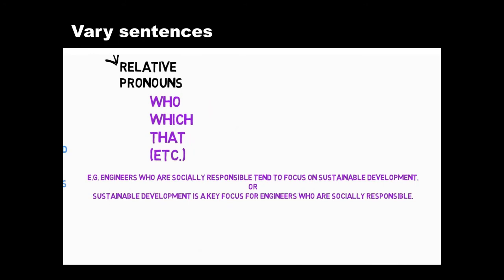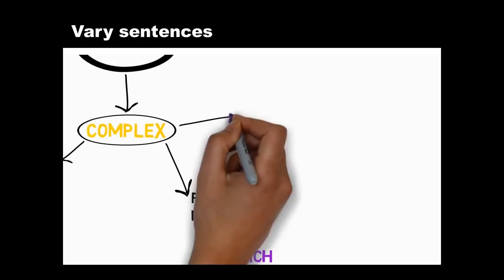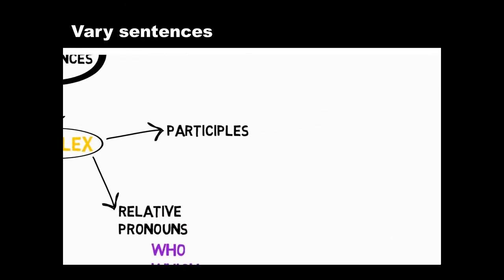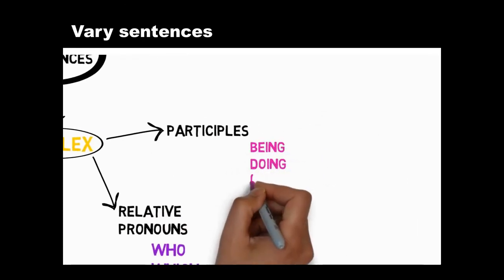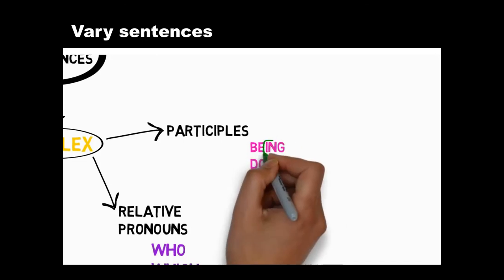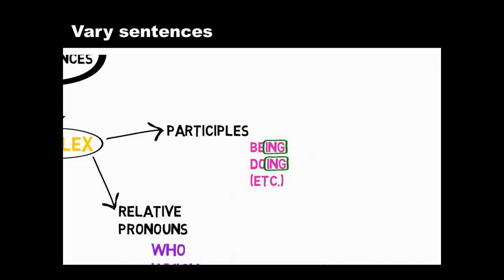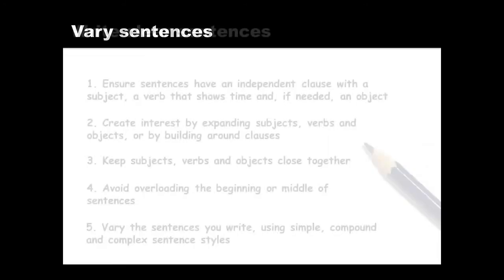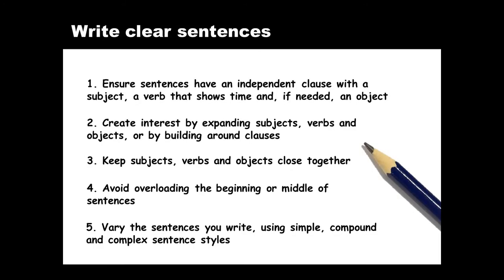And third, you can use a participle to join a partial or incomplete idea to a main idea. Participles often end with -ing. You can put participle clauses before or after independent clauses. In summary, you can write clear sentences for engineering if you do all these things.